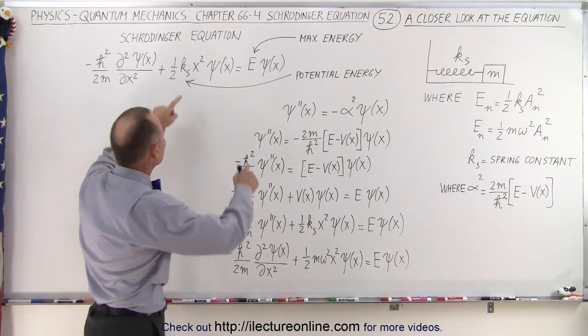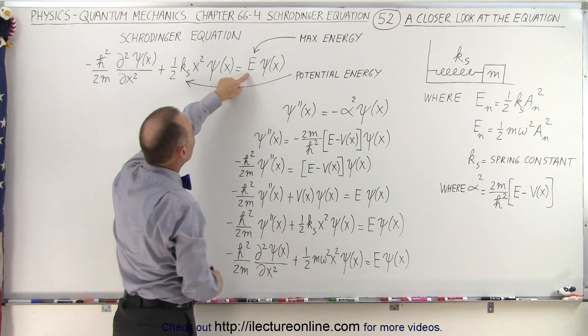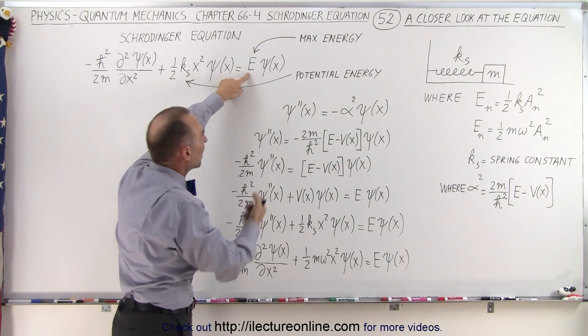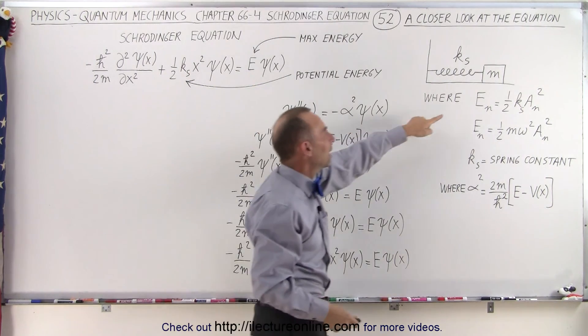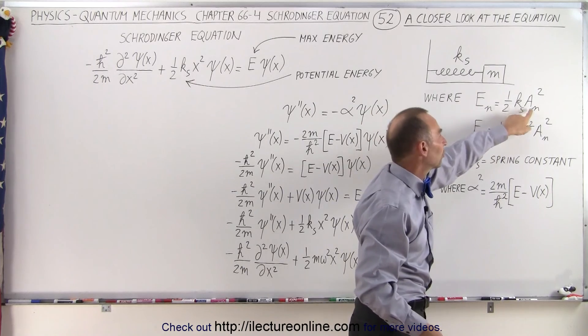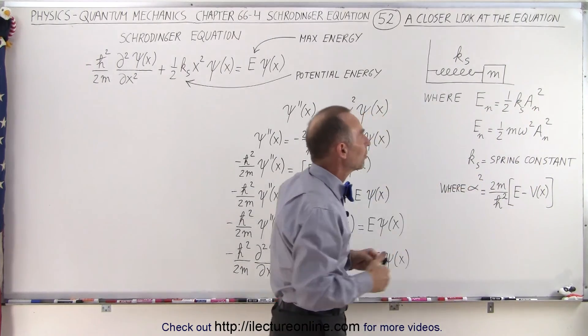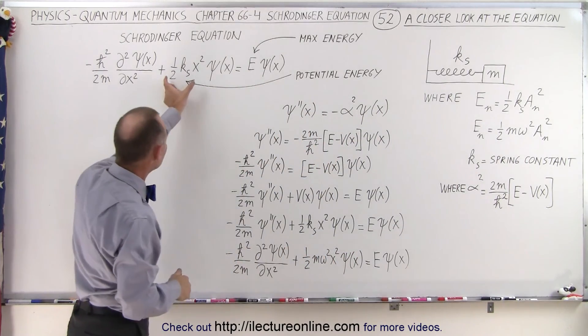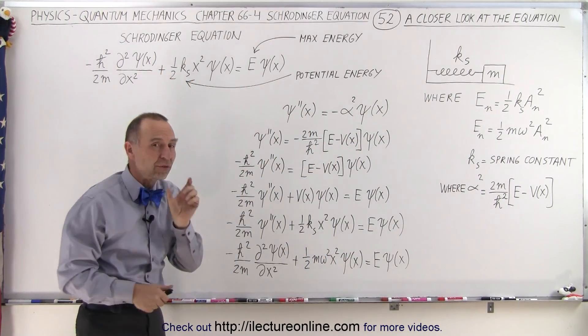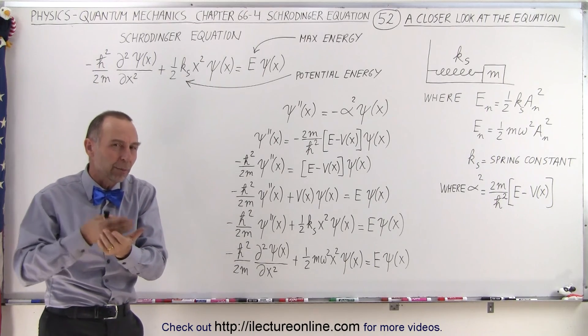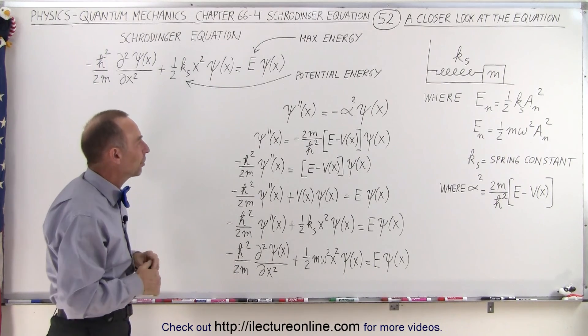So what's the difference between these two expressions right here? Now this here is the maximum energy, the maximum energy obtained when you have the maximum amplitude—that would be one-half k times a squared, a being the maximum amplitude. This here is the potential energy as a function of position, where the position could be anywhere between zero and the maximum amplitude.